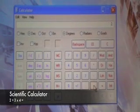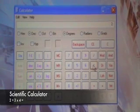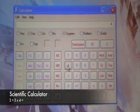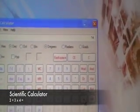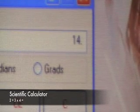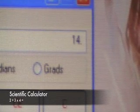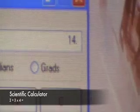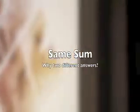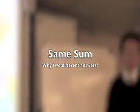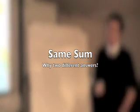2 plus 3 times 4. Now can you see that we have an answer of 14. So for the same sum we've got two different answers. So which one is correct?